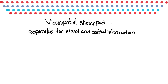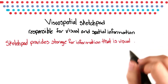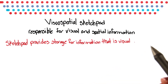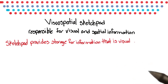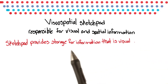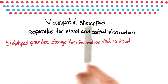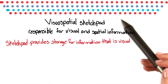Try this. Close your eyes. Are they closed? Okay, now tell me how many rows of dots there were on the screen. Okay, open your eyes. Were you right? So for this example, the sketchpad provides storage for information that's visual, such as images or photos. In this example, you are using your visuospatial sketchpad when you were trying to remember how many rows of dots there were on the screen.